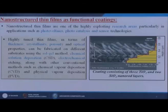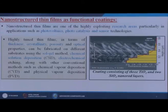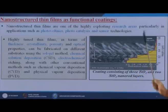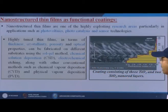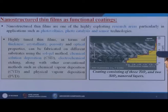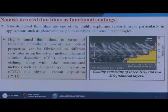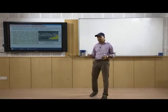Now we discuss nanostructure thin films as functional coatings. Nanostructure thin films are one of the highly exploited research areas, particularly in applications such as photovoltaics, photocatalysis, and sensor technologies. Highly tuned thin films in terms of thickness, crystallinity, porosity, and optical properties can be fabricated on different substrates using the sol-gel method, chemical solution deposition, electrochemical etching, chemical vapor deposition (CVD), and physical vapor deposition (PVD).